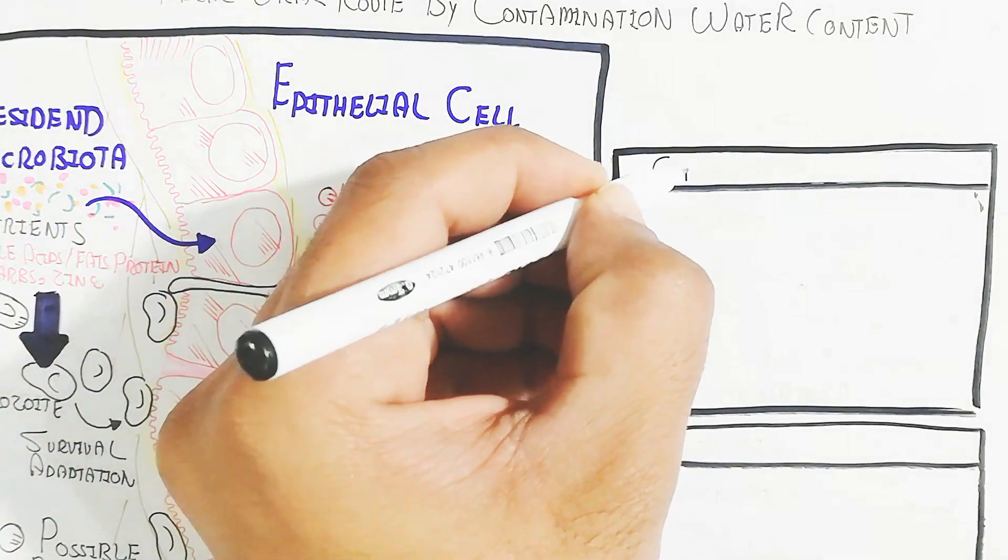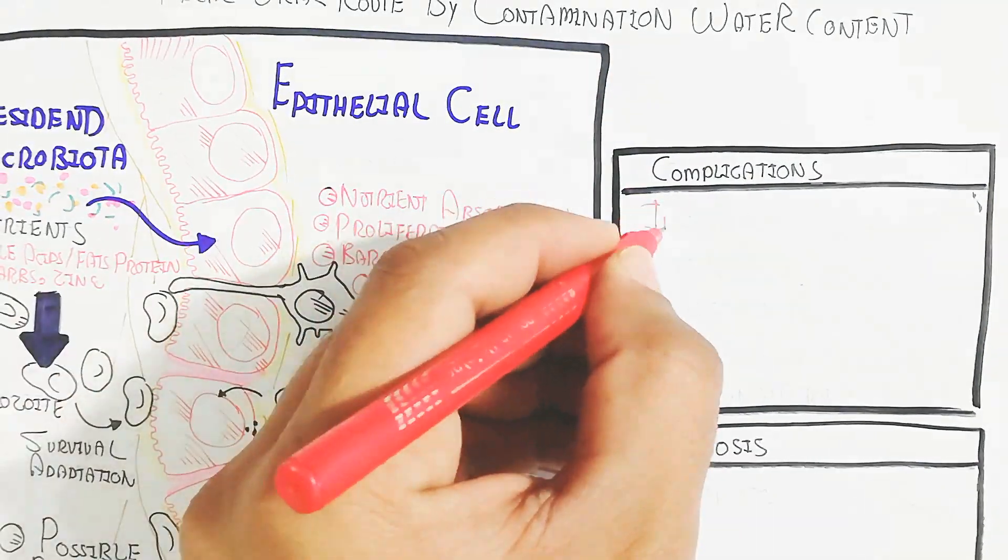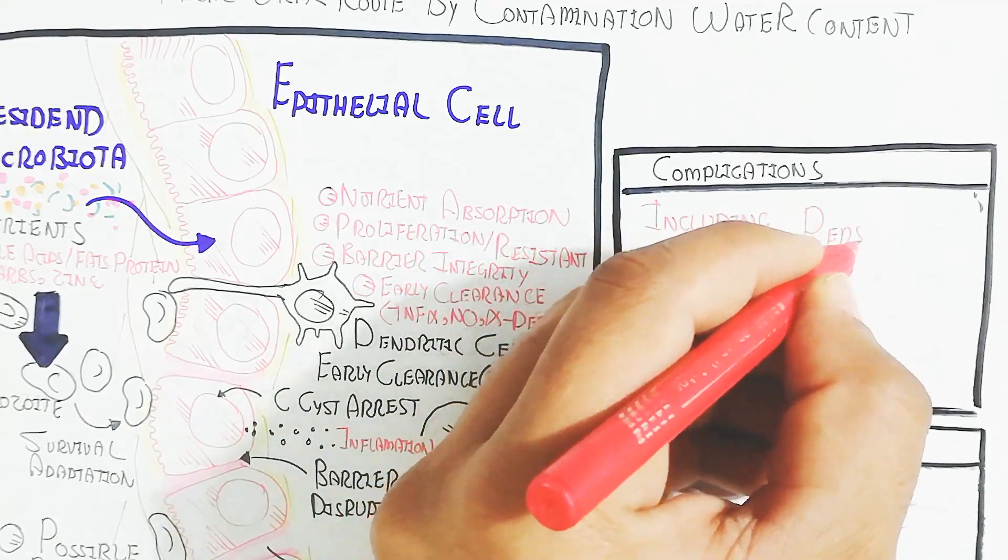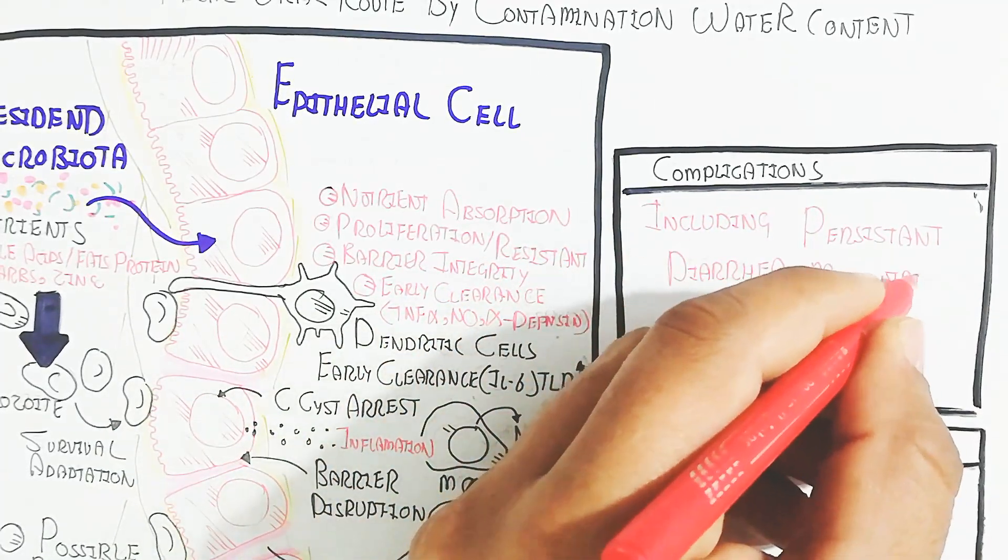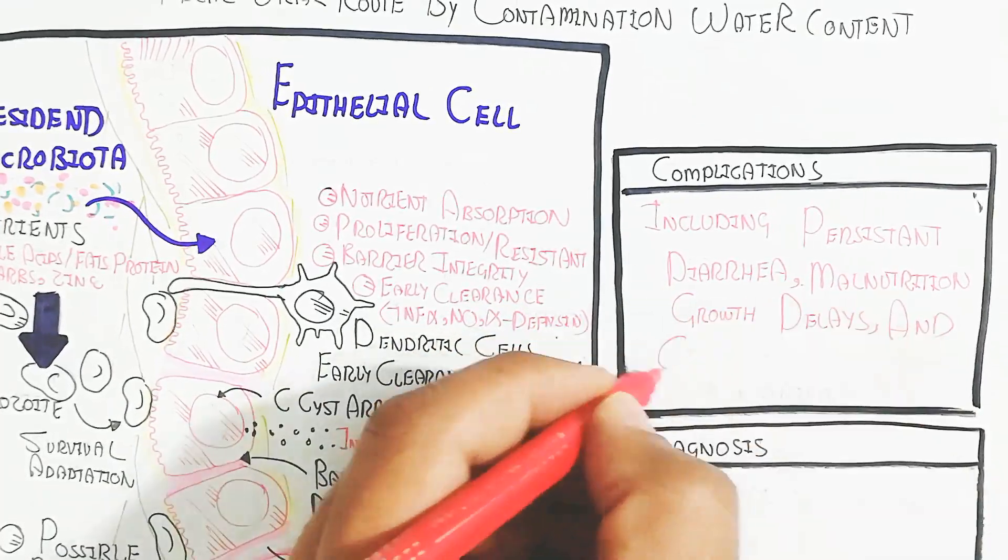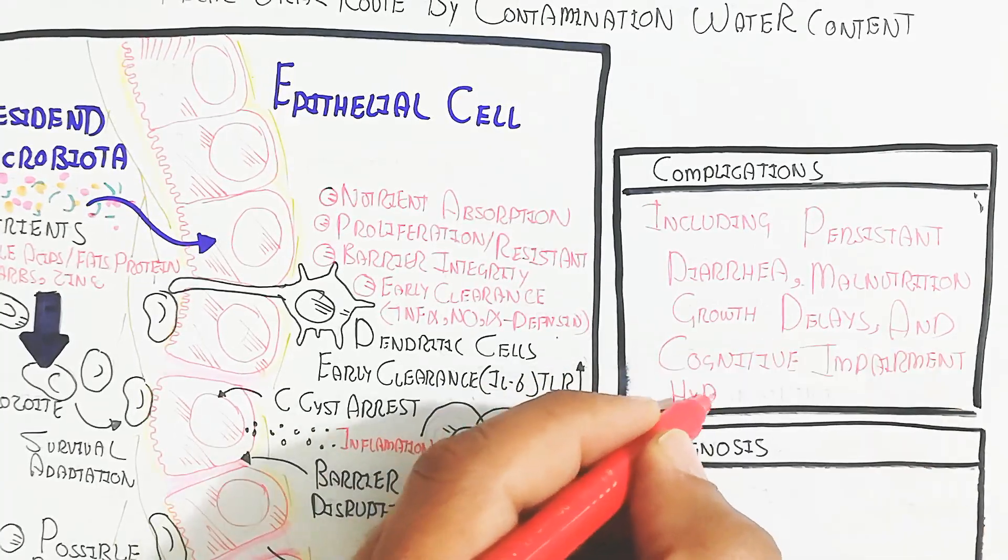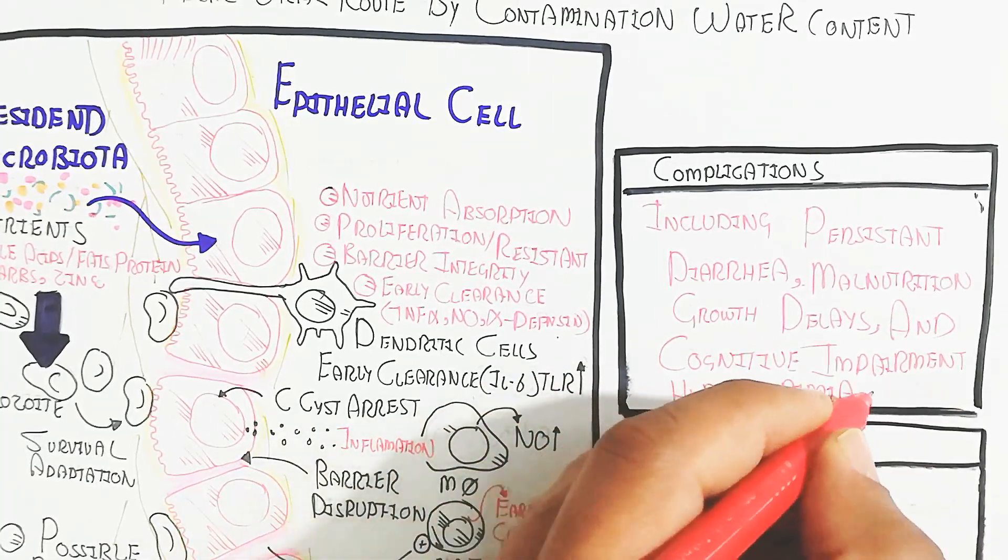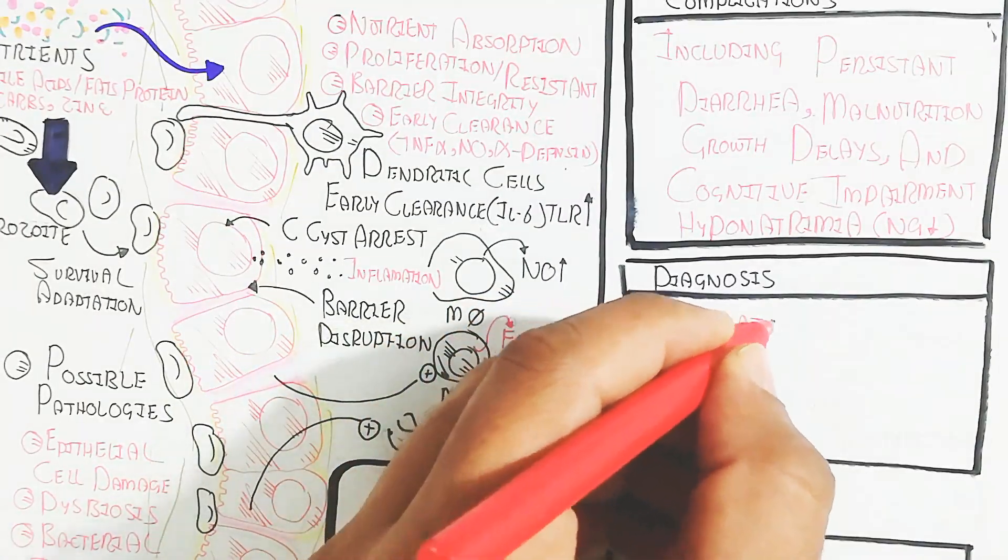Complications include persistent diarrhea due to sodium absorption not being possible and too much epithelial damage. Malnutrition, growth delays, and cognitive impairment can occur. Due to sodium and potassium imbalance, hyponatremia develops. Sodium decreases as well as other complications.